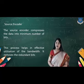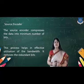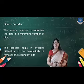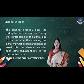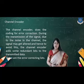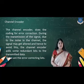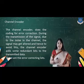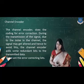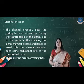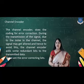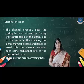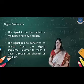The next block is the source encoder. The source encoder compresses the data into the minimum number of bits, and this process helps in effective utilization of the bandwidth by removing redundant bits. The channel encoder applies error correction as well as error detection algorithms. During transmission, if some noise is present, the signal may get altered. To avoid this, the channel encoder uses some redundant bits so that we can remove the error from the signal.